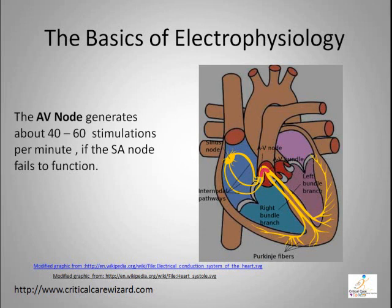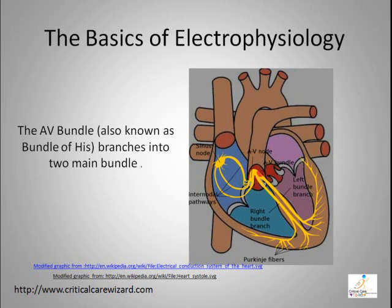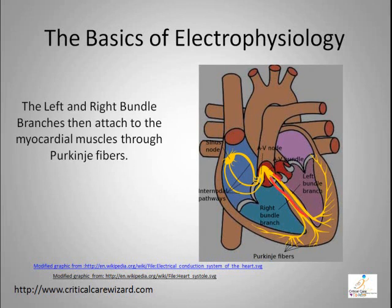The AV node generates about 40 to 60 stimulations per minute. If the SA node fails to function, the conduction travels down to the ventricle area through the bundle of HIS. The AV bundle, also known as the bundle of HIS, branches into two main bundles. The left and right bundle branches then attach to the myocardial muscles through Purkinje fibers.